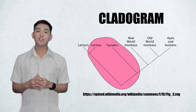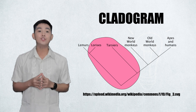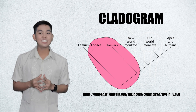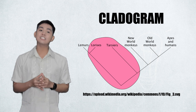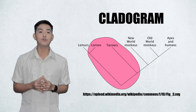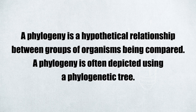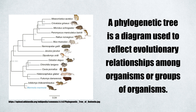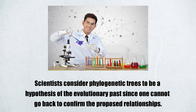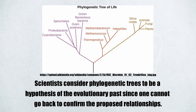A cladogram is a diagram used to represent a hypothetical relationship between groups of animals. A phylogenetic tree is a diagram used to reflect evolutionary relationships among organisms, or groups of organisms.